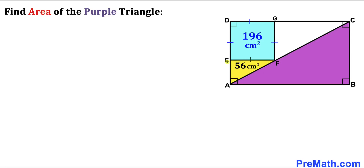Welcome to pre-math. In this video we have a blue square, a yellow triangle, and a purple triangle fully confined in a rectangle ABCD. The area of the blue square is 196 cm², the area of the yellow triangle is 56 cm², and our task is to calculate the area of the purple shaded triangle.